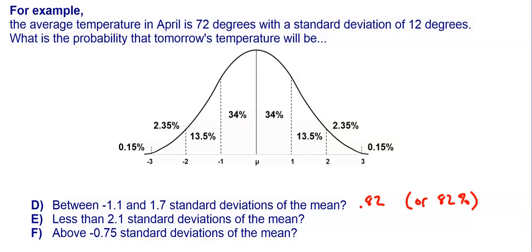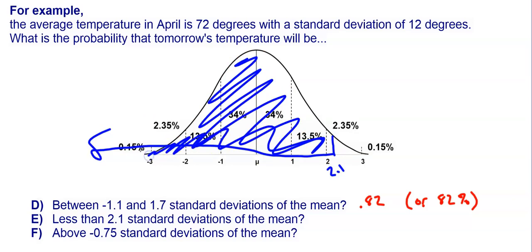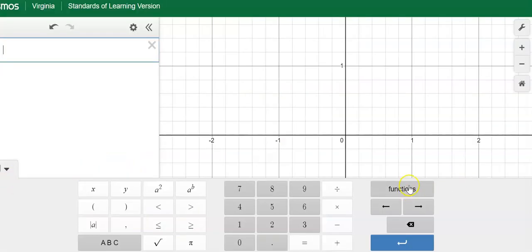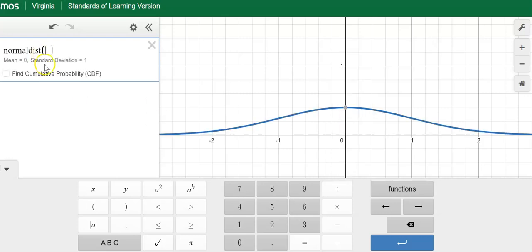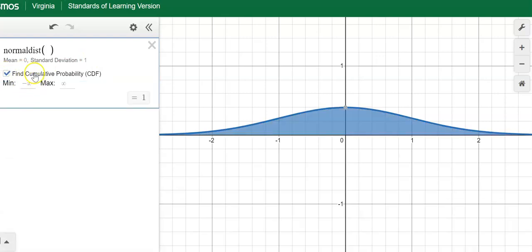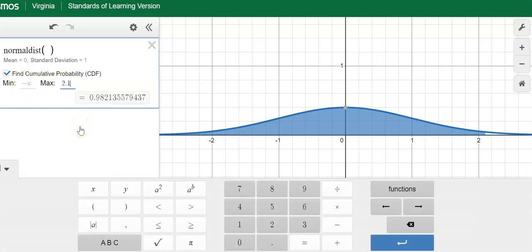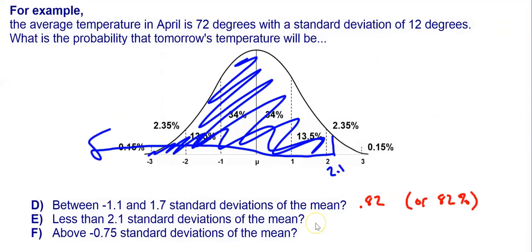For less than 2.1 standard deviations, here's 2.1 and we want everything less than that — the entire area going on forever to the left. On Desmos, under keyboard, functions, distribution, normal distribution, leave the 0 and 1 alone. This time we leave the minimum as negative infinity and enter 2.1 as the maximum. The shaded region matches our drawing, and the result is 0.98 rounded, so there's a 98% chance that tomorrow's temperature will be less than 2.1 standard deviations of the mean.